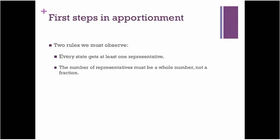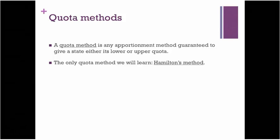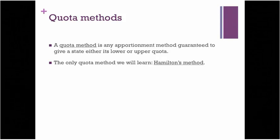The first type of method we're going to learn is called a quota method — a method guaranteed to give each state either its lower quota or its upper quota. We're going to learn one quota method, named for Hamilton: Hamilton's method. That is the subject of the next lecture.